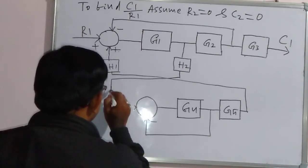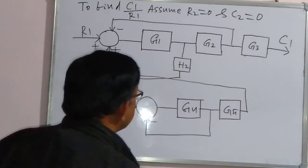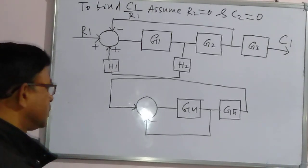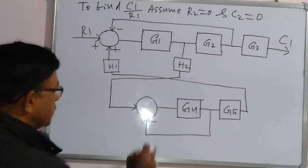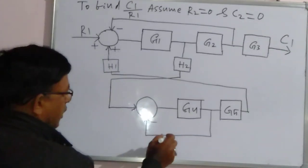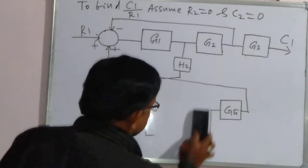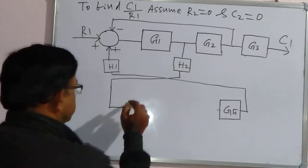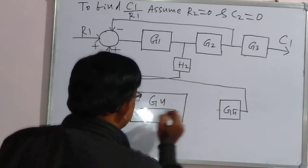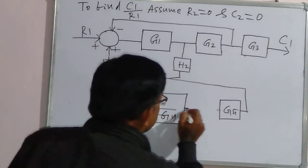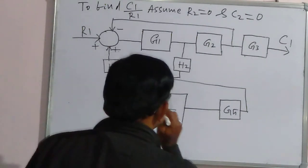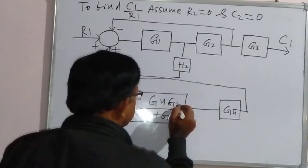Directly it is connected to this summing point. Now the problem is very simple — this is in canonical form, therefore we can solve this: G4 divided by 1 plus G4. Now these two blocks are connected in series, therefore this will be G4·G5.